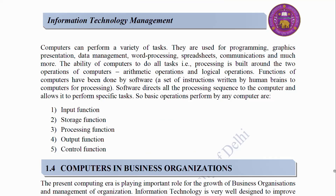Computers can perform a variety of tasks: programming, graphics presentation, data management, word processing, spreadsheets, communications and much more. Processing is built around two operations: arithmetic operations and logical operations. Functions of computers are carried out by software — a set of instructions written by the human brain to direct the computer. Software directs all the processing sequence and allows the computer to perform specific tasks. The basic operations performed by any computer are: 1. Input function, 2. Storage function, 3. Processing function, 4. Output function, 5. Control function.